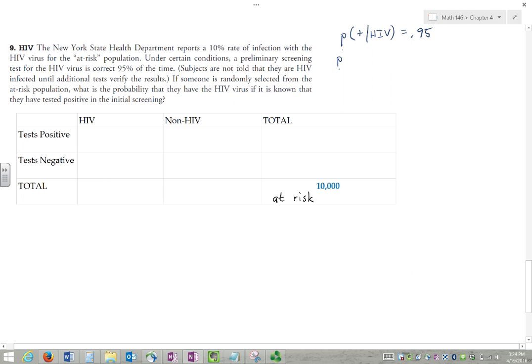And the probability of testing negative, given that they're not sick, is also 0.95. And 10% rate of infection means the proportion that actually have HIV is 0.1, 10%.